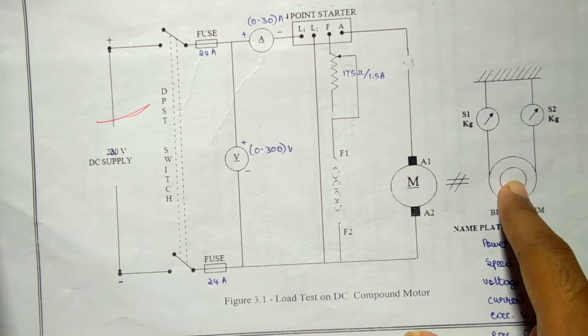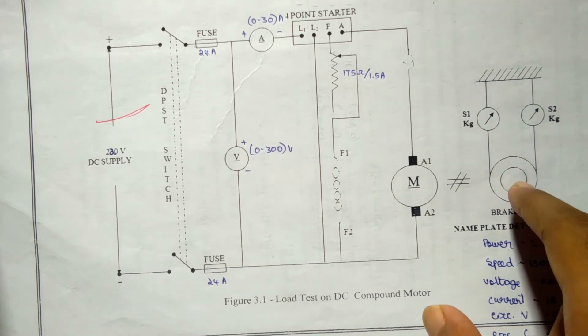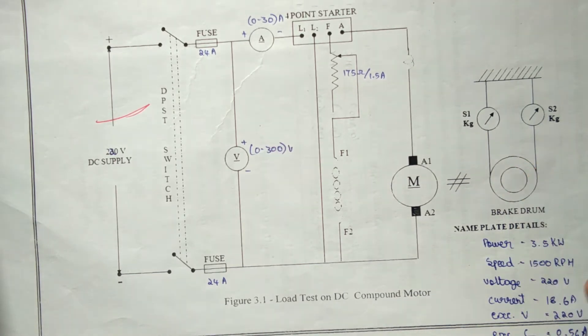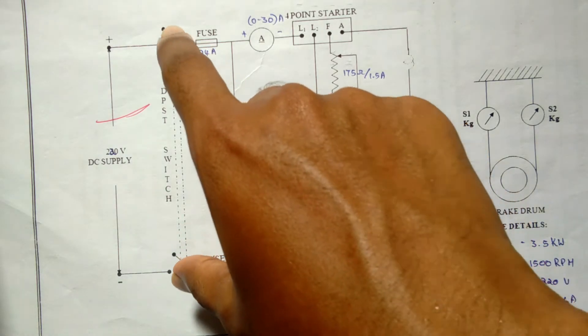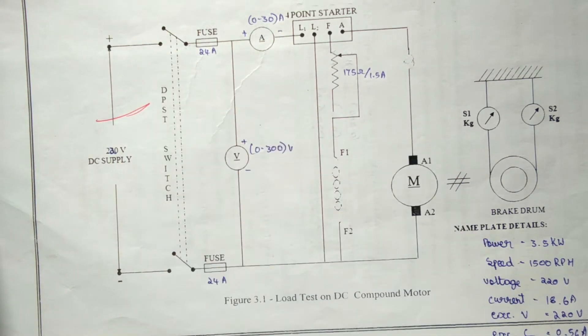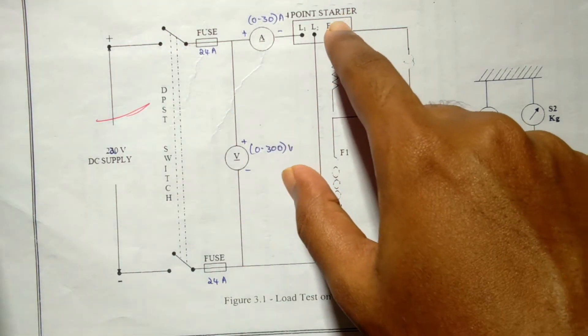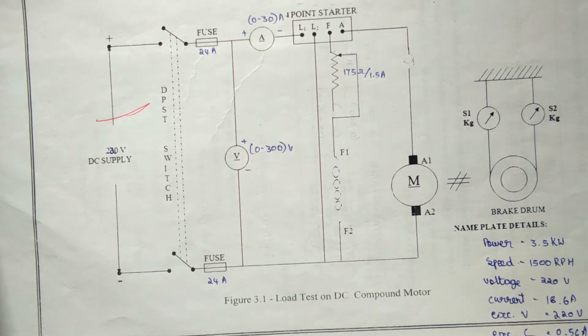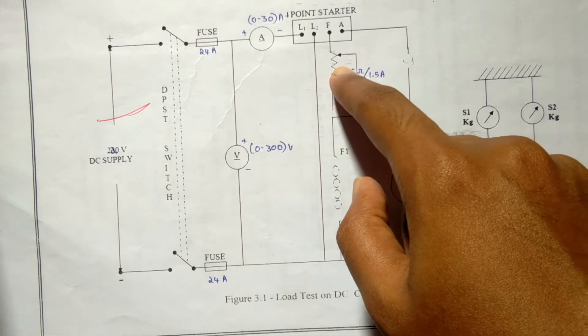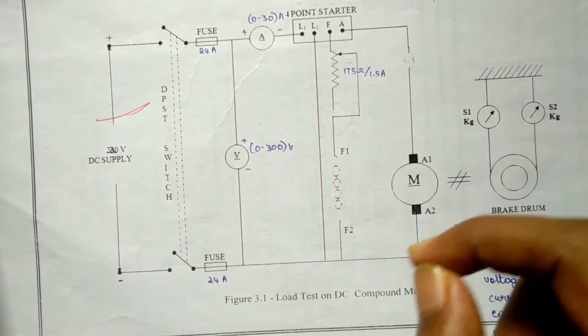The procedure is: the supply is given by closing the DPSC switch. The motor is started using four-point starter. The motor field rheostat is adjusted from its minimum resistance position to get the rated speed.